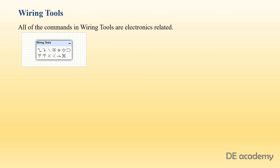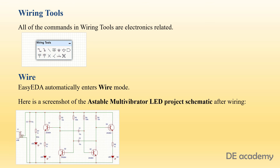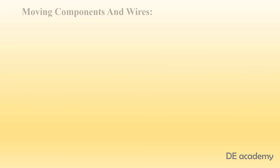In the schematic, the parts or components should be connected as per our requirements. This job is done by wiring tools, where all components are electronics related. Some of the tools we are going to use while designing are as shown in the figure. One of the finest features of this tool is that it automatically enters wire mode. Here is a screenshot of the Astable multivibrator LED project schematic after wiring.